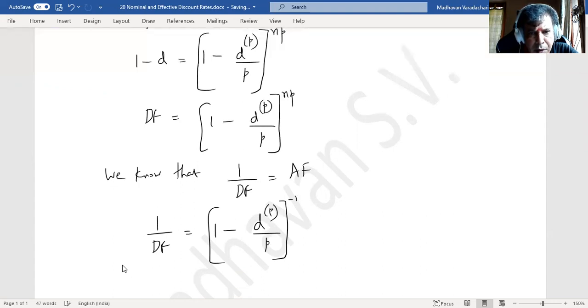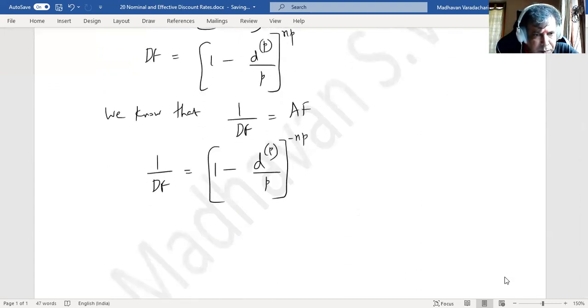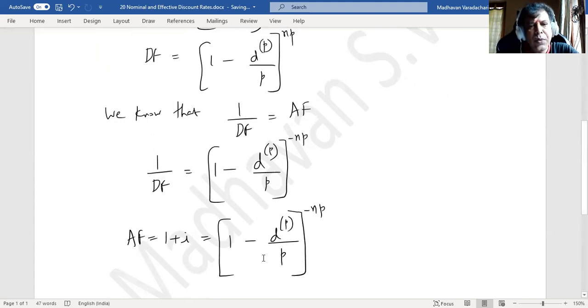1 by the discount factor is nothing but the accumulation factor, and we know the accumulation factor 1 plus i equals 1 minus dp by p to the power of minus np.